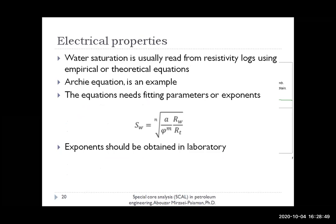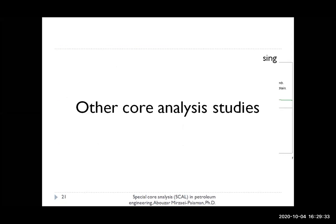The fourth SCAL property is electrical properties. We normally calculate water saturation from resistivity logs using empirical or theoretical correlations such as the Archie equation. To run these equations, we need some fitting constants that should be determined from laboratory measurements in advance. Once they are determined, we can run the saturation calculations.